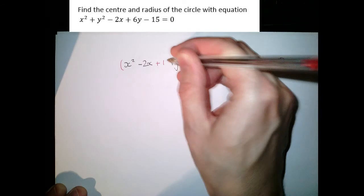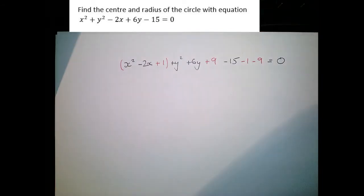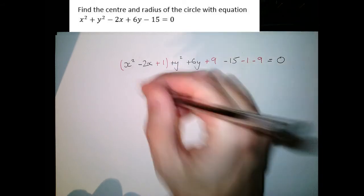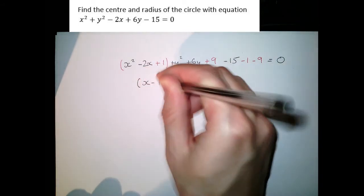These three terms there, they form the quadratic equation that is the square of x minus 1. There we've got x minus 1 squared.